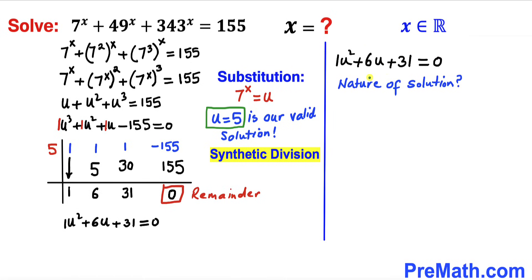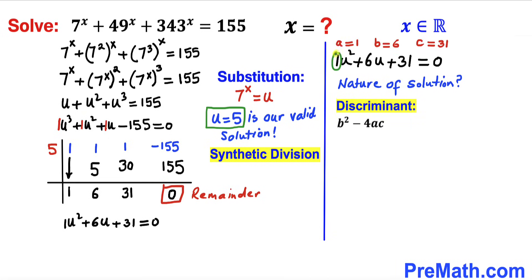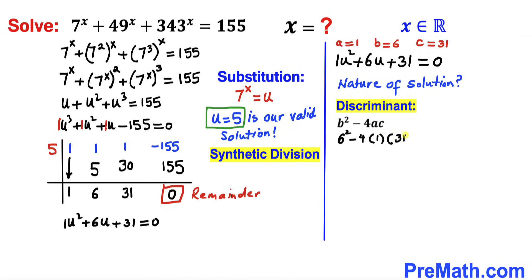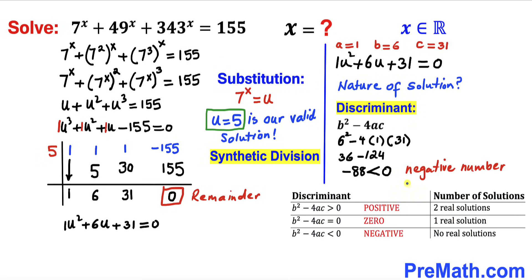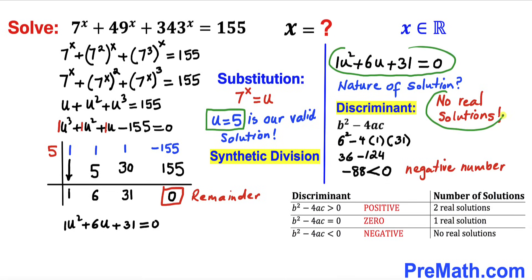Before we solve, we are going to find out the nature of the solutions since we are only interested in real numbers. In our case a equals to 1, b equals to 6, and c equals to 31. The discriminant is b squared minus 4ac: 6 squared minus 4 times 1 times 31, which gives us 36 minus 124, equaling negative 88. Since the discriminant is less than 0, this quadratic equation has no real solutions.